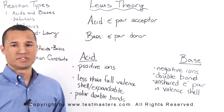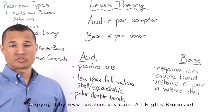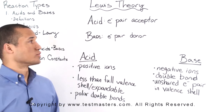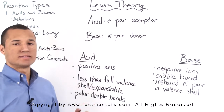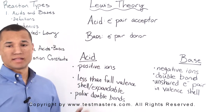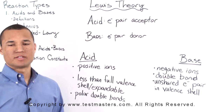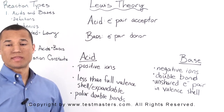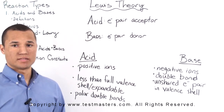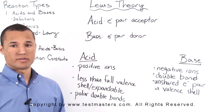Lewis theory describes acids and bases in terms of electron pairs. An acid is an electron pair acceptor, and a base is an electron pair donor. Because we're dealing with electron pairs, the definition for an acid and a base is much broader.